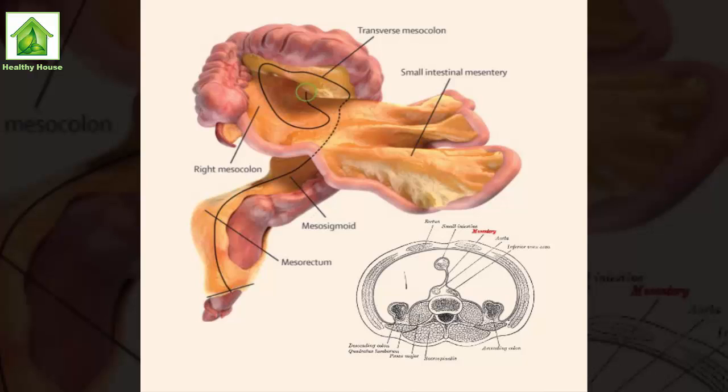And while that doesn't change the structure that's been inside our bodies all along, with the reclassification comes a whole new field of medical science that could improve our health outcomes. When we approach it like every other organ, we can categorize abdominal disease in terms of this organ, said Coffee. This means that medical students and researchers will now investigate what role, if any, the mesentery might play in abdominal diseases, and that understanding will hopefully lead to better outcomes for patients.